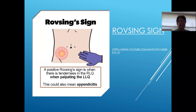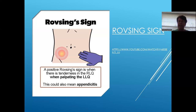Rovsing's sign is tenderness in the right lower quadrant when you're palpating the left lower quadrant — it's referred rebound tenderness. To perform the test, stand on the person's right side and gradually perform deep palpation of the left lower quadrant. If the student has increased pain on the opposite side or on the right, it suggests right-sided peritoneal inflammation, which is another sign of appendicitis.